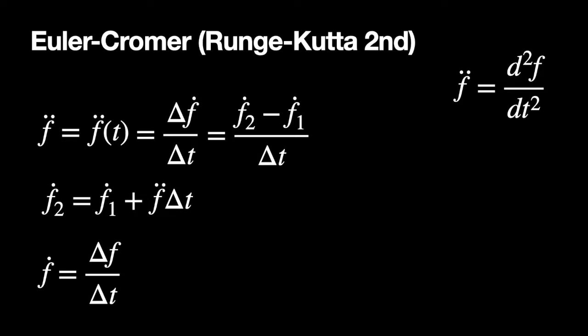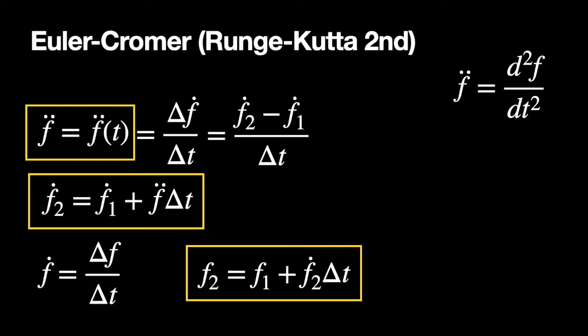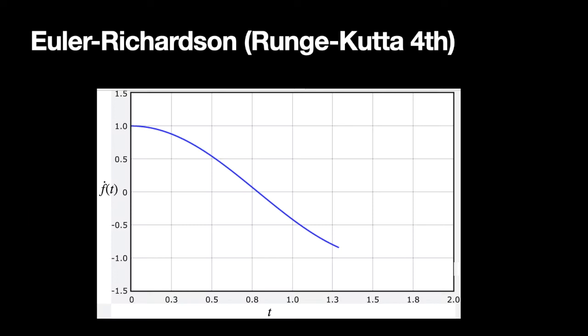Next, I take f-dot and define that as the change in f over the change in t, and do the same thing. So f2 equals f1 at the beginning of the time interval. A little trick here: I'm going to use the updated derivative f2-dot to find the new f2. So the plan is: I calculate f-double-dot, use that to calculate f2-dot at the end of the time interval, then use f2-dot to calculate f2. It's simple, and that's really why I like this one — it's easy for students to pick up, especially in terms of acceleration, velocity, and position.